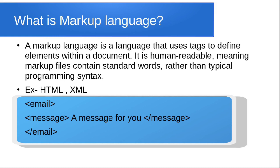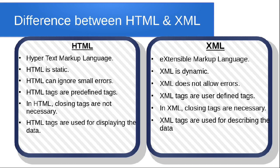Now let's see the difference between HTML and XML. HTML stands for Hypertext Markup Language, whereas XML stands for Extensible Markup Language. HTML is static — whatever you write inside an HTML file stays as it is — but XML is dynamic, meaning there is a connection between the server or database and XML.